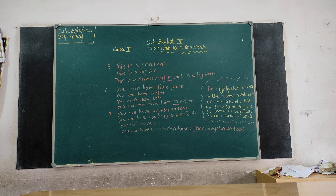See the highlighted words in the above sentences. The highlighted words are joining words. We use these words to join two words, or two sentences, or two groups of words. 'But' is a joining word. 'And', 'but', 'or', and so on are joining words.